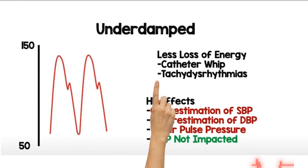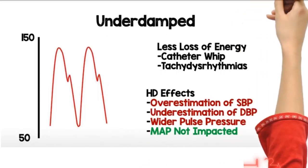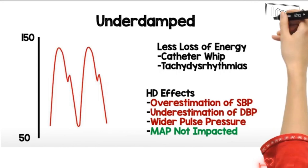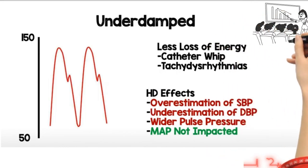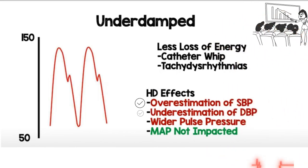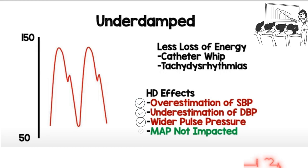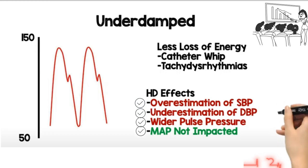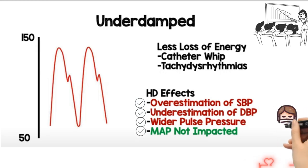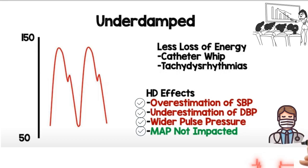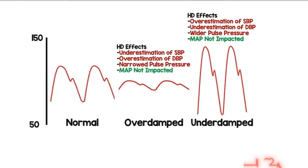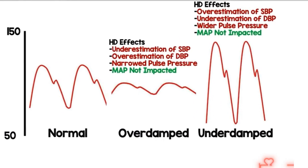An under-damped waveform has less loss of energy — causes include catheter whip and tachyarrhythmia. The hemodynamic effects are: it will overestimate your systolic blood pressure, underestimate your diastolic blood pressure, and you're going to have a much wider pulse pressure. Mean arterial blood pressure is not impacted.